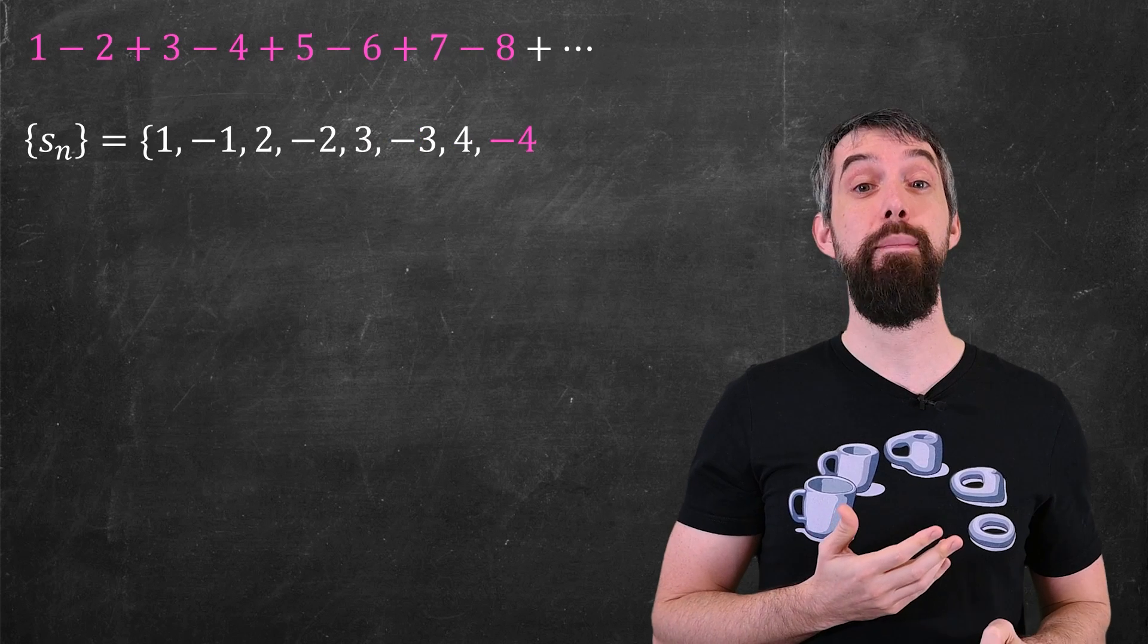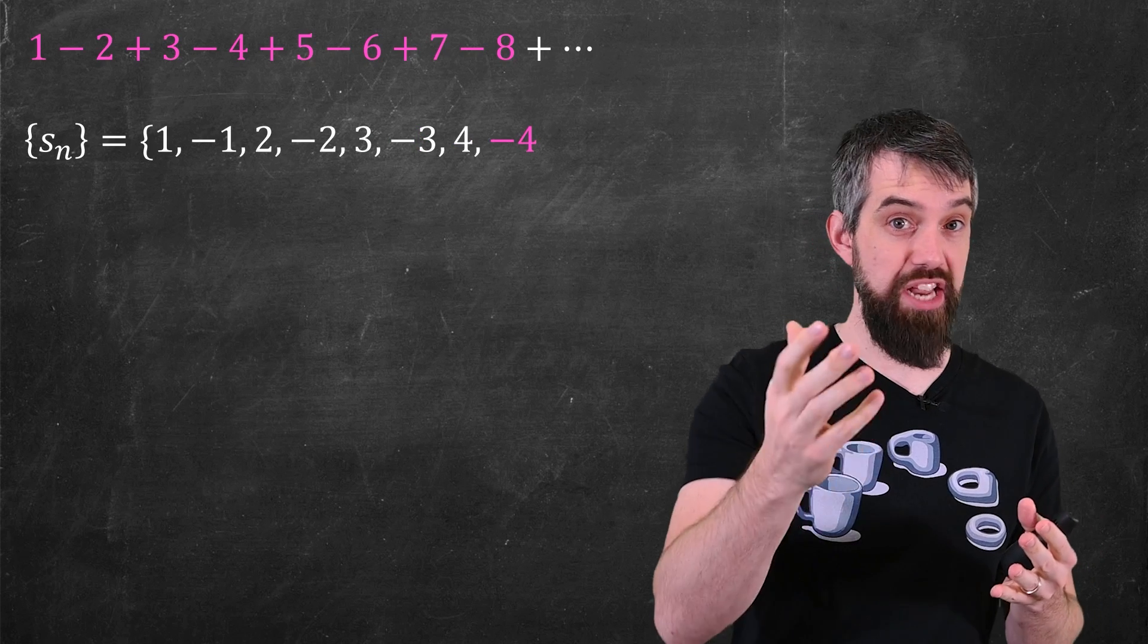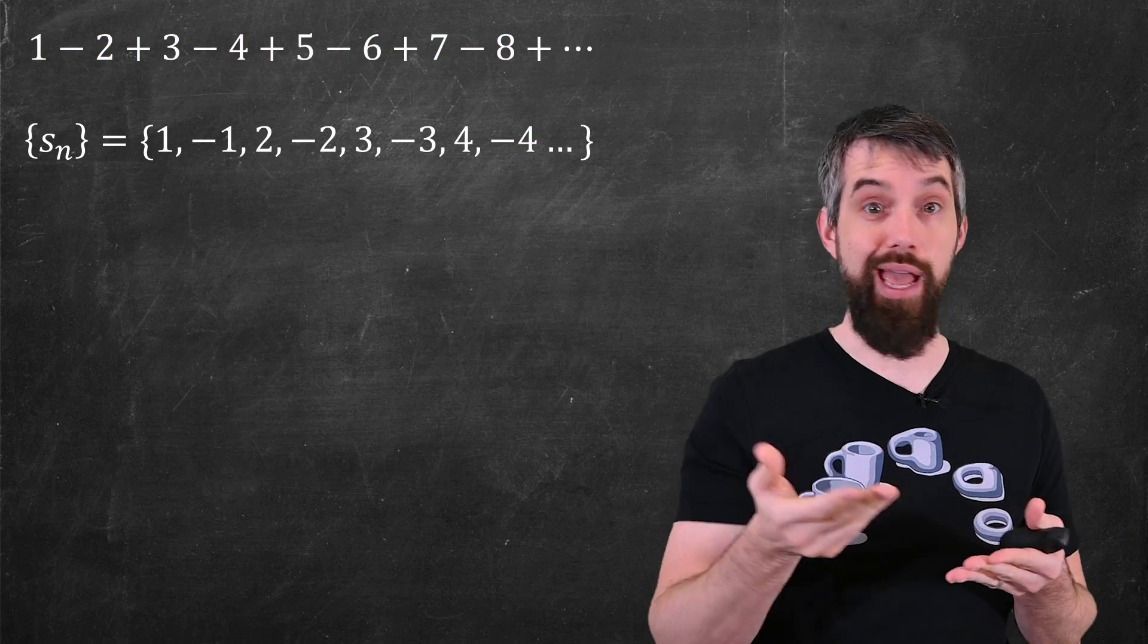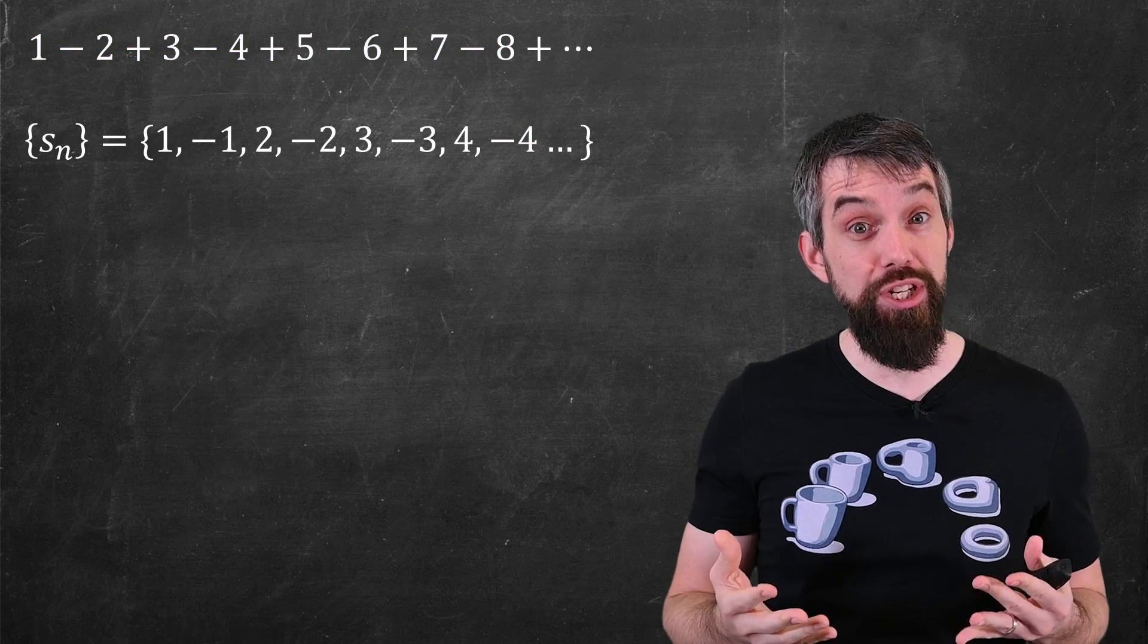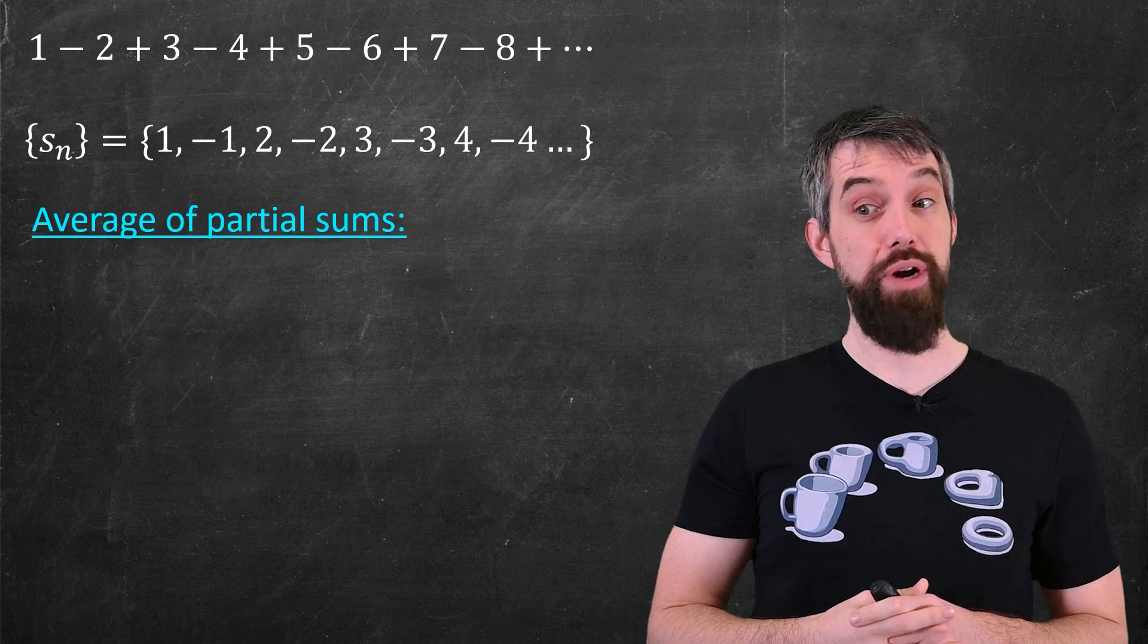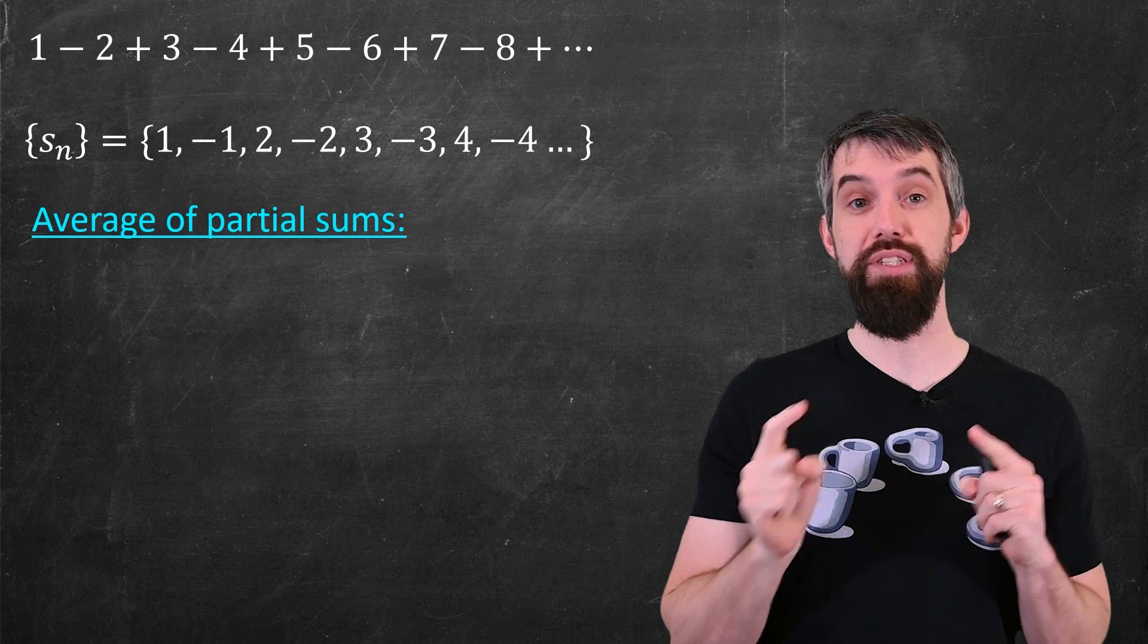This is a divergent series in the normal sense. This sequence of partial sums isn't getting close to any particular value. But it's also divergent in our new Cesàro sense. Well, okay, let me compute it out. I'm going to do it separately for the evens and the odds.